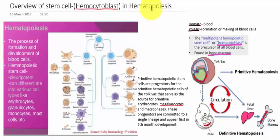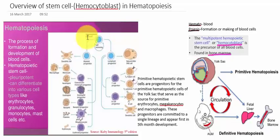Stem cells are totipotent in nature, they are pluripotent, they are multipotent, they are oligopotent, and they are unipotent. The main type relevant here is the pluripotent stem cell.